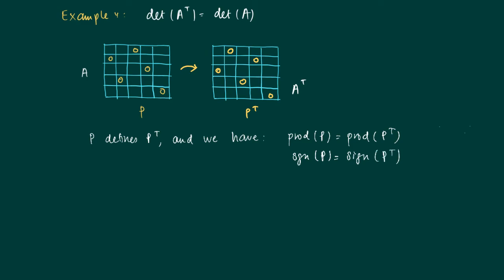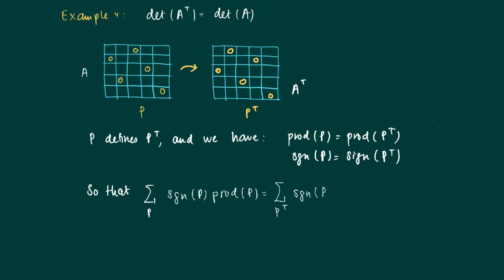Furthermore, the sign of P equals the sign of P^T, since any inversion remains an inversion when we swap rows and columns. By summing over P^T and calculating the sign of P^T and the product of P with respect to matrix A, this equals summing over all P^T patterns for A^T with the sign of P^T times the product of P^T with respect to the transposed matrix. So the left-hand side equals the determinant of A, and the right-hand side equals the determinant of A^T. We're done.